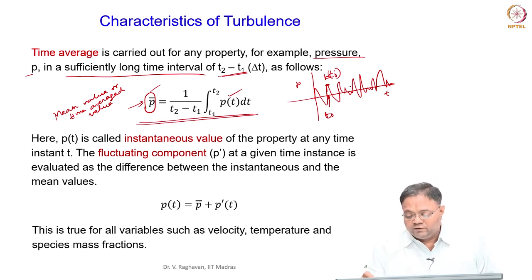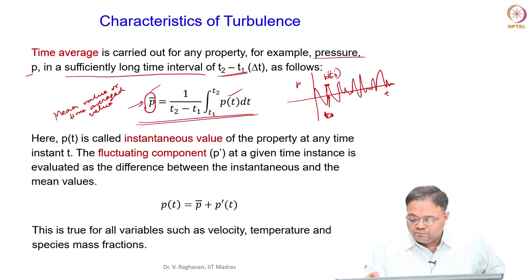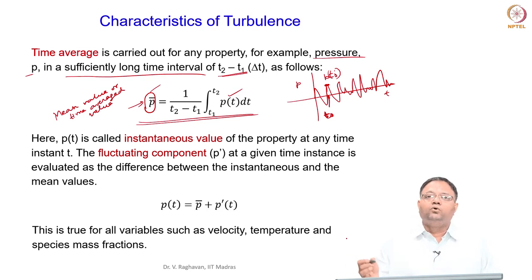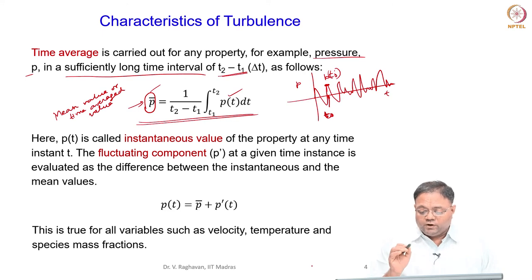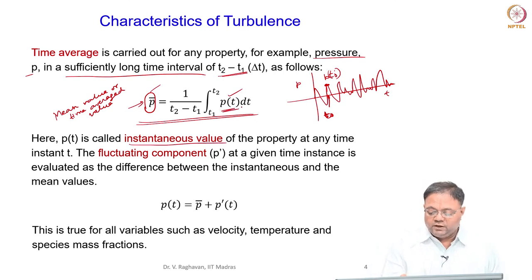You can do the experiment several times, but at a particular location the pressure versus time curve you get will not be the same each time. For example, at time t₀ you might measure pressure at a peak value, but repeating the experiment at the same location and same time instant you may see the pressure at its minimum or zero. Because of random oscillations you can get any value, making it impossible to compare instantaneous values.